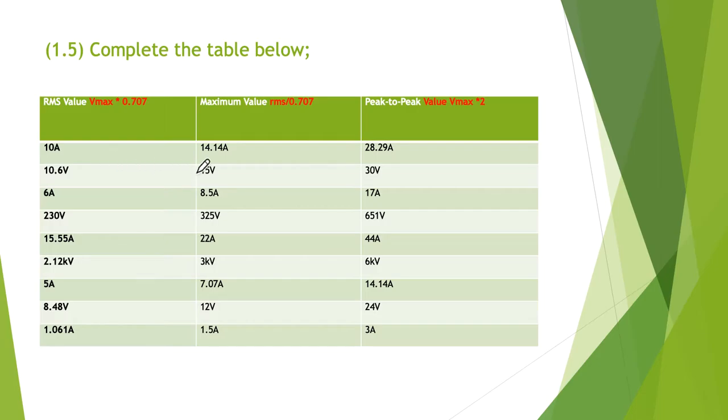If we are given this one, given the VRMS, to get the Vmax we would have had to take 7 and divide it by 0.707, and it will give you 10 amps. Similarly, depending on what's missing in the table, you've just got to use these dividers or multipliers to determine the appropriate values in the table.